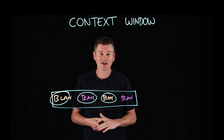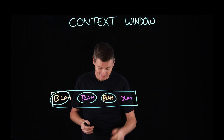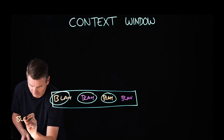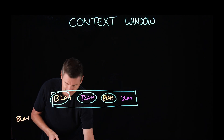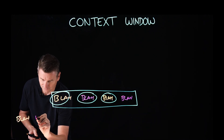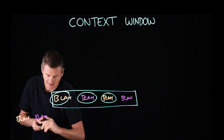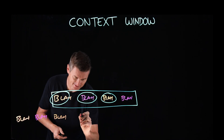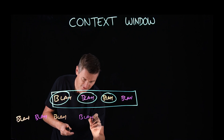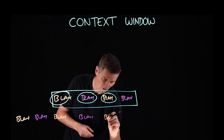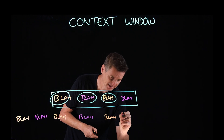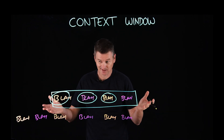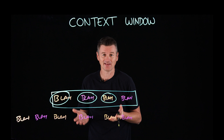Now let's consider a longer conversation — so more BLARs. I send my prompt, it sends me a response, and now we go back and forth with more conversations. So I say something, it responds to that. I say one more thing and it responds to that. So now we have a longer conversation here to deal with.